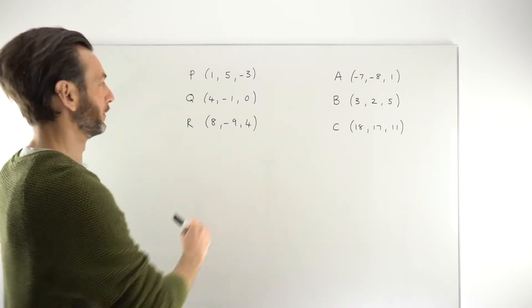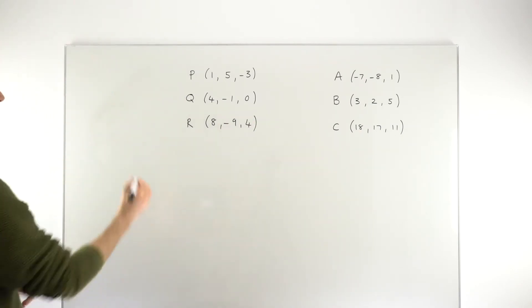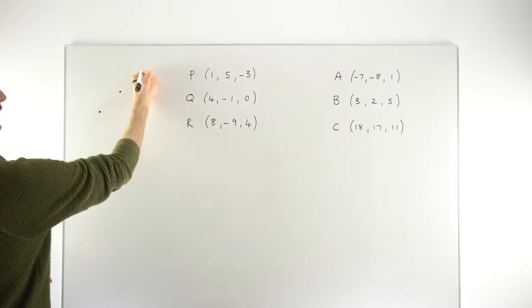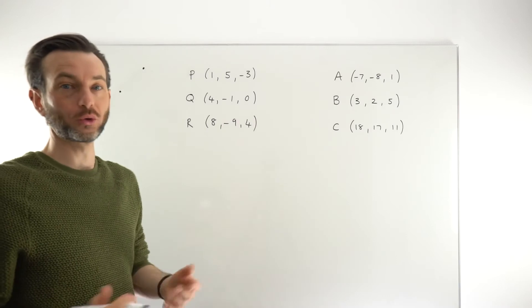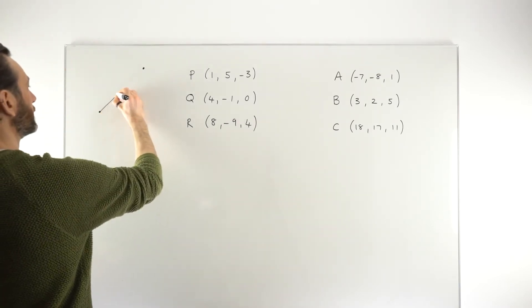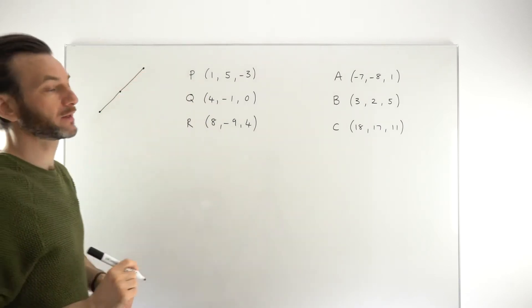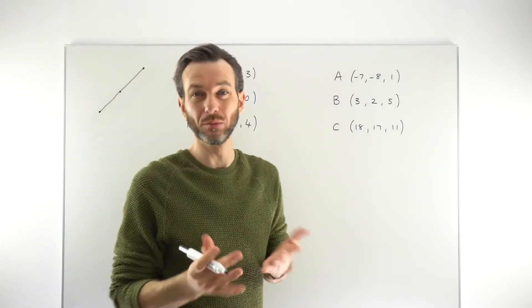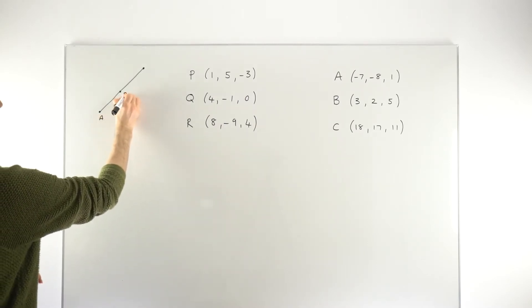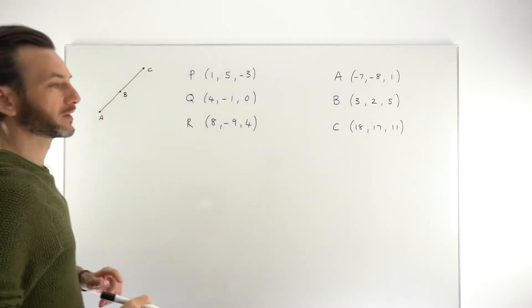So before we tackle these problems, let's have a quick think about the theory. Let's say that we've got three points, and we suspect that they might be lined up. So they might be collinear, and we want to prove that they're collinear. So we're going to tackle this problem using vectors. You can also do the same thing using gradients, and both methods are fairly similar in complexity. So let's just say that we've got labels on our points here. So we'll just go for the traditional A, B, and C.